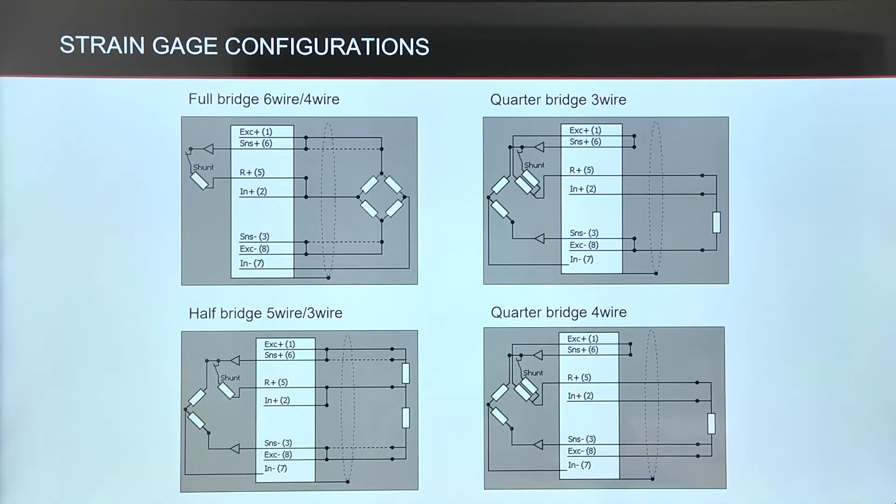Precise bridge completion resistors are integrated into DeweSoft hardware to be able to measure in half or quarter bridge mode. If for whatever reason sense lines are not connected directly at sensor site, lead wire resistance must be taken into account to avoid offset and gain error.